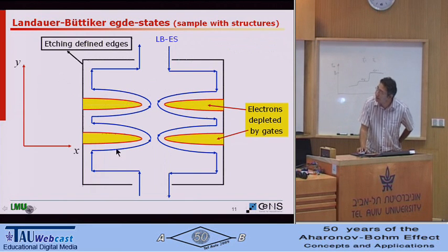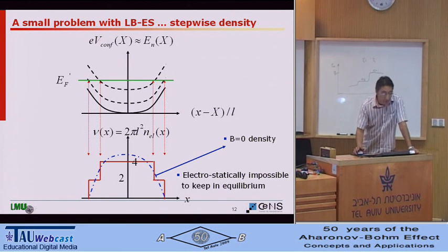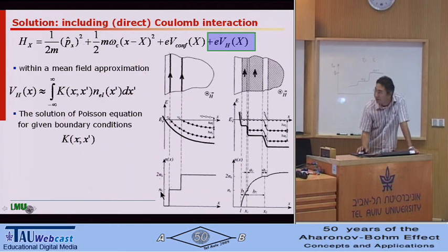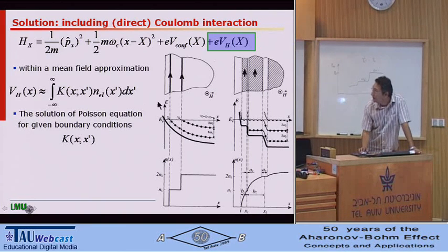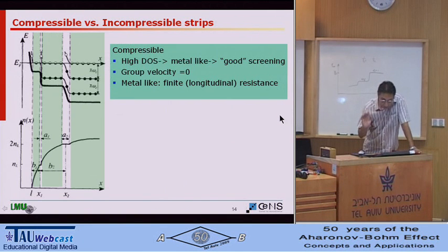You can put some constrictions on your sample and then play with these edge states. But it's a bit strange because you cannot keep this electron distribution electrostatically stable. So what you have to do is include interactions — single-particle direct Coulomb interactions. Because your zero-magnetic-field density profile was something like this, then it should be something in between. Chklovskii and Chklovskii did these calculations about 20 years ago and obtained a picture where you have some fully occupied states which are incompressible, and some compressible states which behave like a metal.